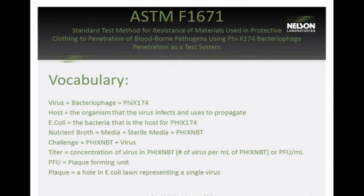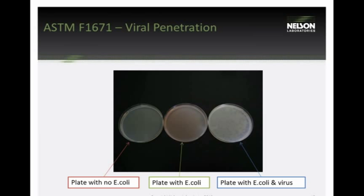Once the virus is added to the nutrient broth, we call it the challenge. The concentration of virus in the challenge is called the titer, measured in PFU per mL — plaque forming units. A plaque is equivalent to a single colony on a petri dish. On a plate with E. coli lawn, each circular plaque represents a single virus that has infected and eaten into the lawn.